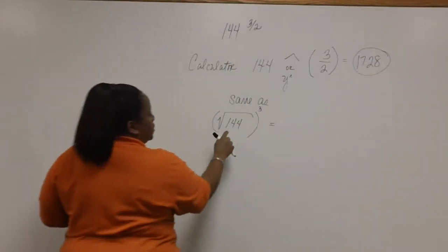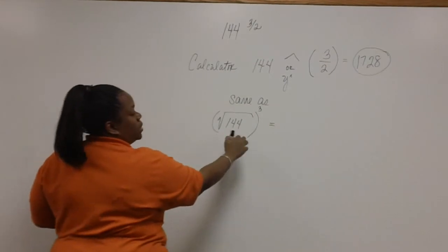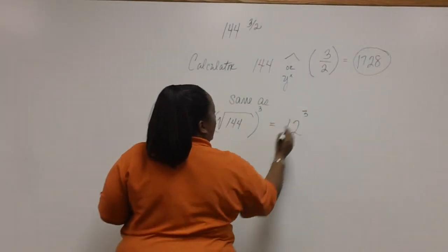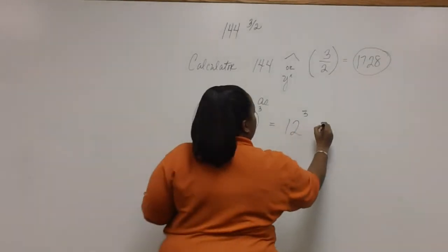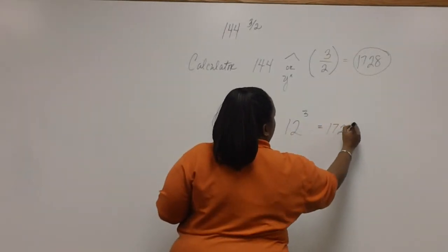Well, the square root of 144 is 12, and 12 cubed is 1728.